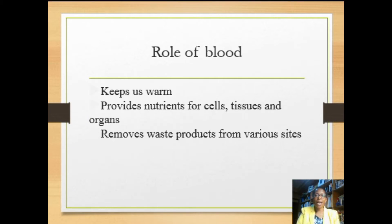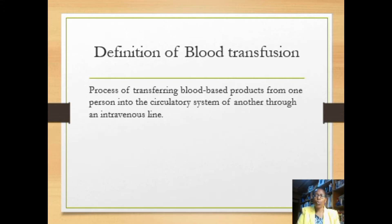First, let us see the function of blood. This is highly summarized: blood keeps us warm because the temperature is well regulated. Blood provides nutrients for all body organs and also removes any waste products for the body to be able to function optimally.